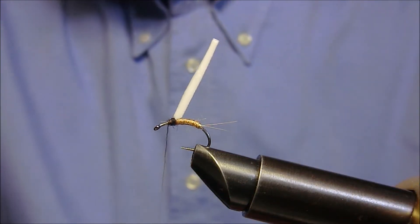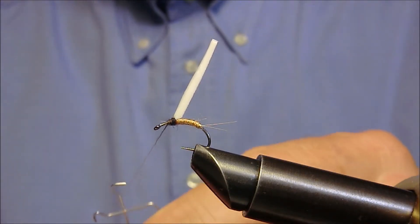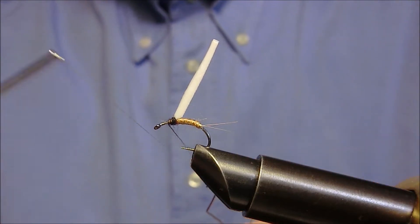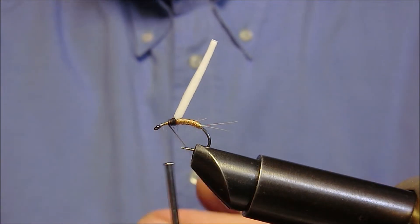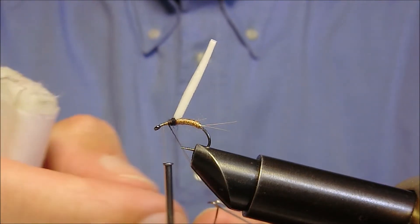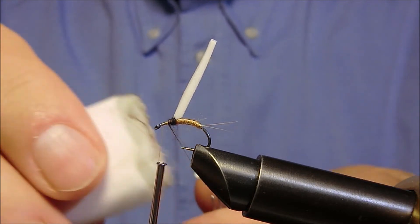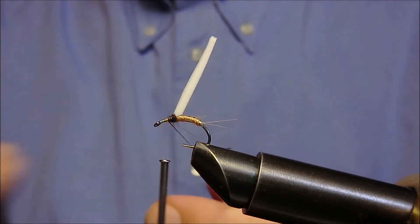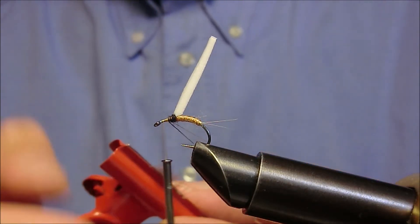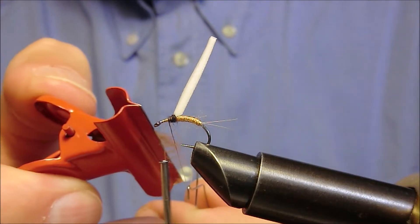Ora effettueremo con l'apposito attrezzino un'asola sul filo di montaggio che sporcheremo di pece e inseriremo all'interno di essa del CDC color mattone che avremo già preventivamente preparato in questo modo.